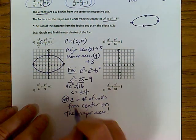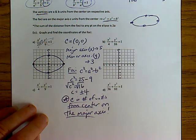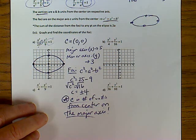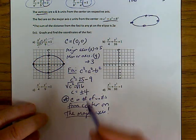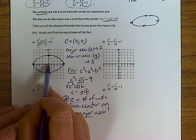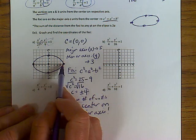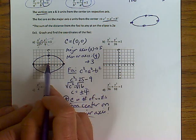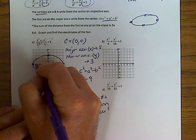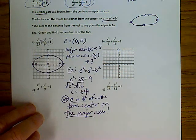c is the number of units from the center on the major axis. So with c = 4, we're going to go four units from the center on the major axis — out four and back four. Make sure you keep listening because we actually have to get those coordinates.